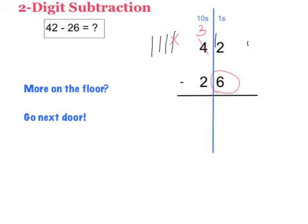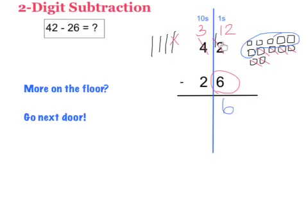Now, if I start out with 2 in the ones place and I add 10, which was taken from the long, I now have not 2 but 12, and from that 12 now I can take away 6. That leaves me with 6 in the ones place. If I do 3 minus 2, I get a 1 in the tens place. That means that 42 minus 26 equals 16.